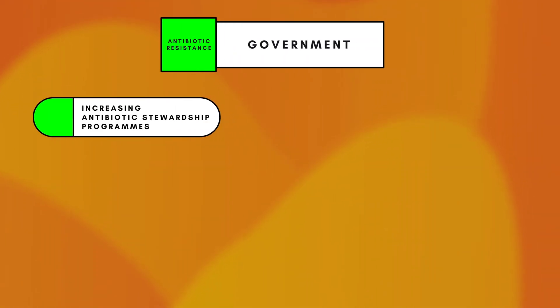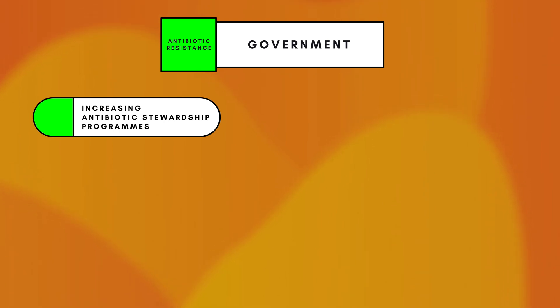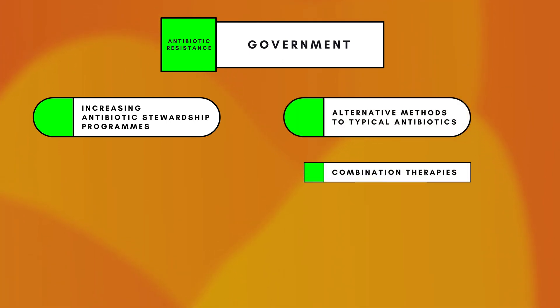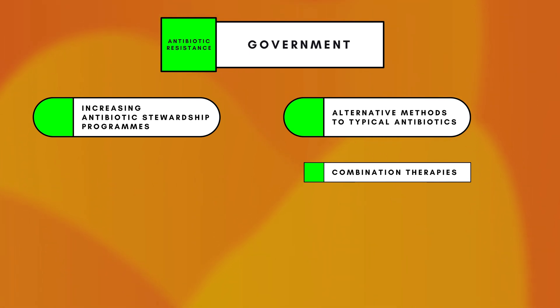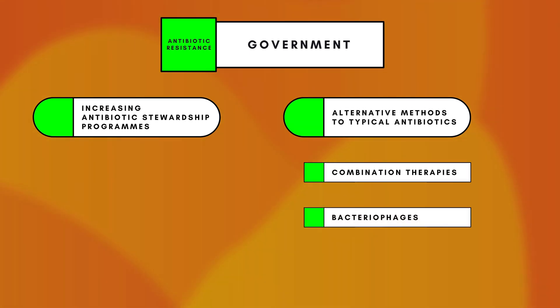Starting with the government — the highest tier — you want to improve antibiotic stewardship programs, investing money into programs that look at how we develop new antibiotics, because these are really the only current way we have of fighting back. Combination therapies are really useful — that's using two antibiotics to fight off one bacteria. Bacteriophages are quite controversial; they are essentially viruses able to destroy bacteria, actually discovered in a river in India.